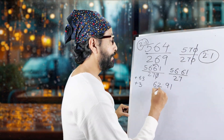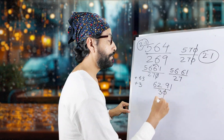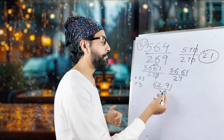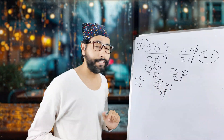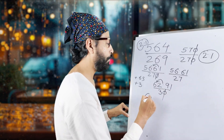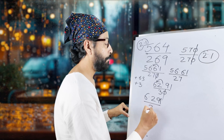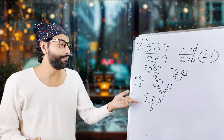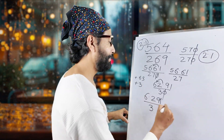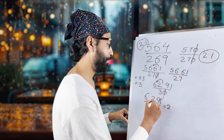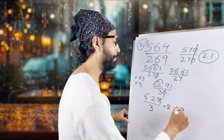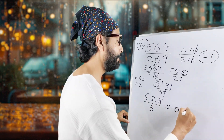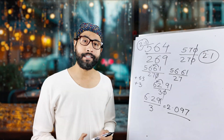Now we divide both numerator and denominator by 10 again, giving us 6.291 divided by 3. Any kindergarten kid can solve this! 3 goes into 6 twice, then into 29 nine times with remainder 2, then 21 divided by 3 is 7. So the answer is approximately 2.097.